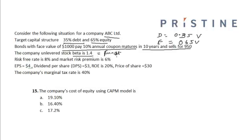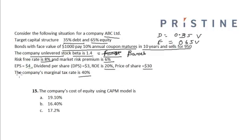The risk-free rate is 8% and the market risk premium is 6%. Earnings per share is $4, dividends per share is $3, return on equity is 20%, and the price per share is $30. The company's marginal tax rate is 40%.